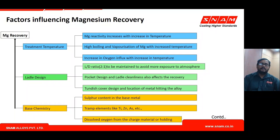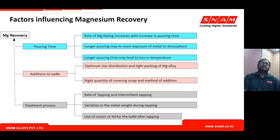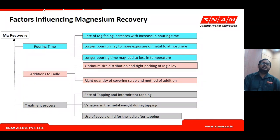Tramp or reactive elements in the liquid metal react with magnesium and reduce its effectiveness for spheroidization. Therefore, base chemistry and tramp elements have a direct impact on magnesium and its usefulness as a nodulizing element.